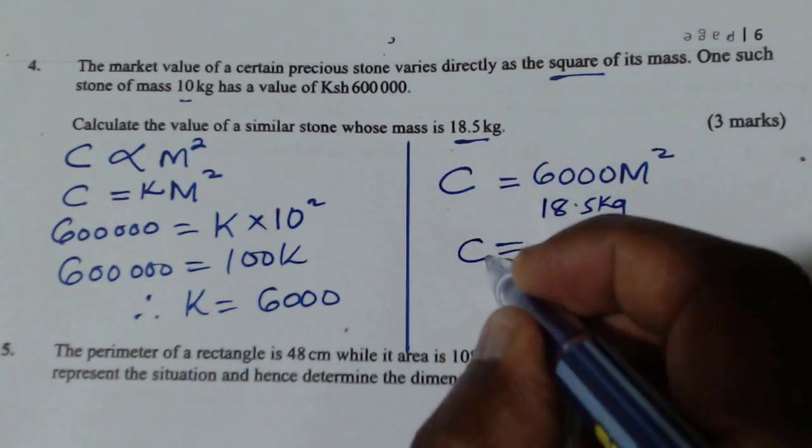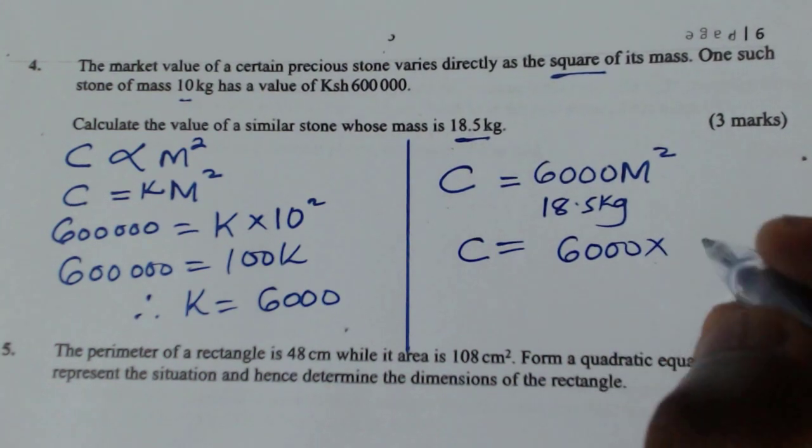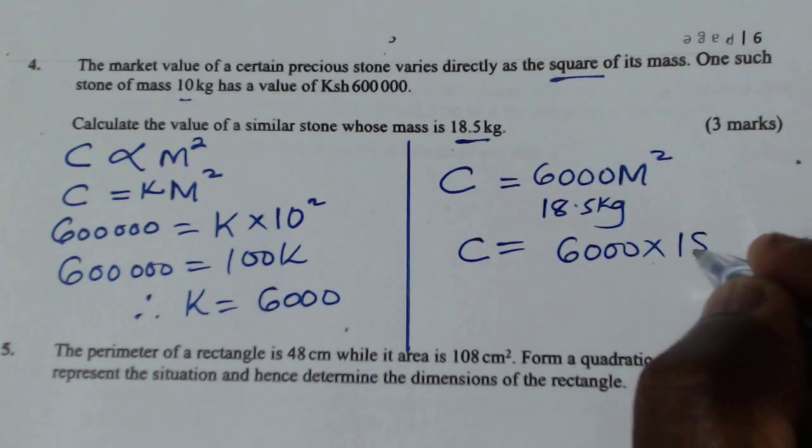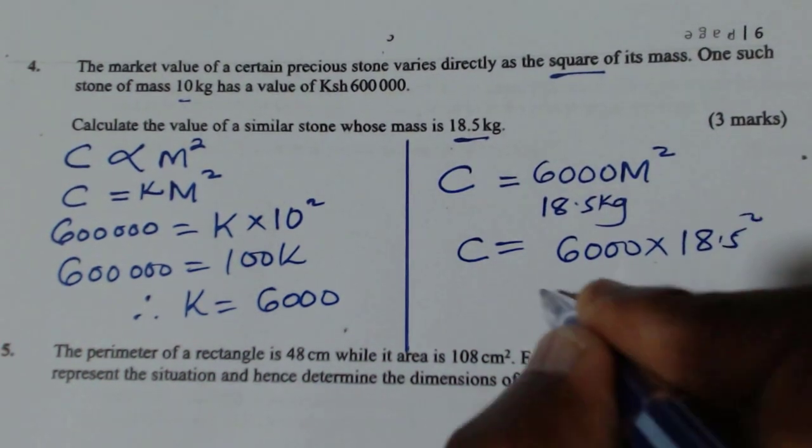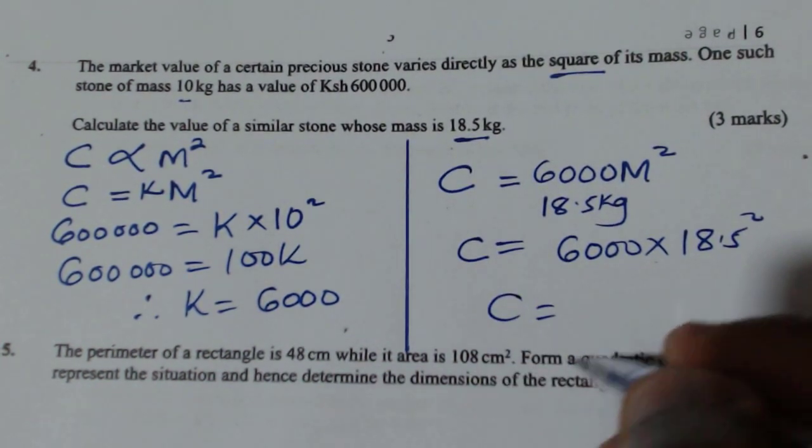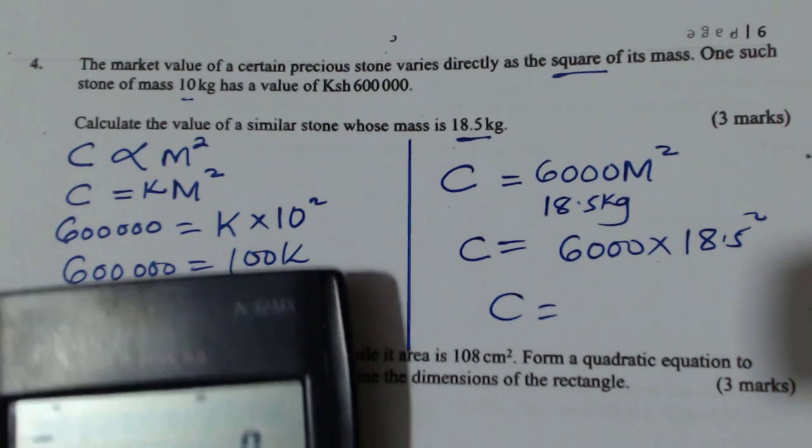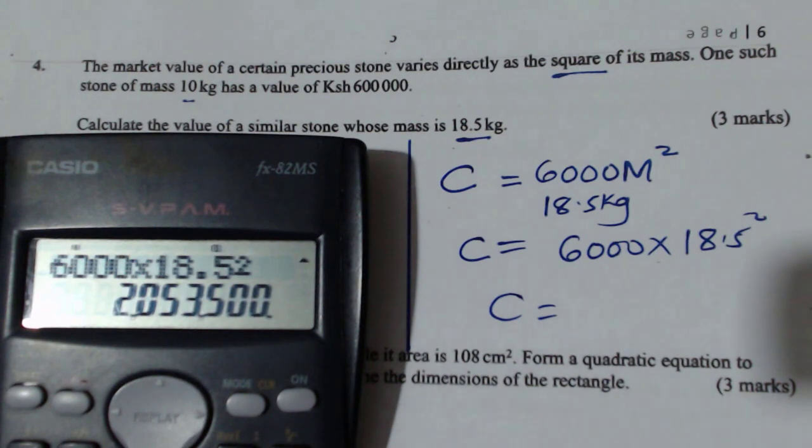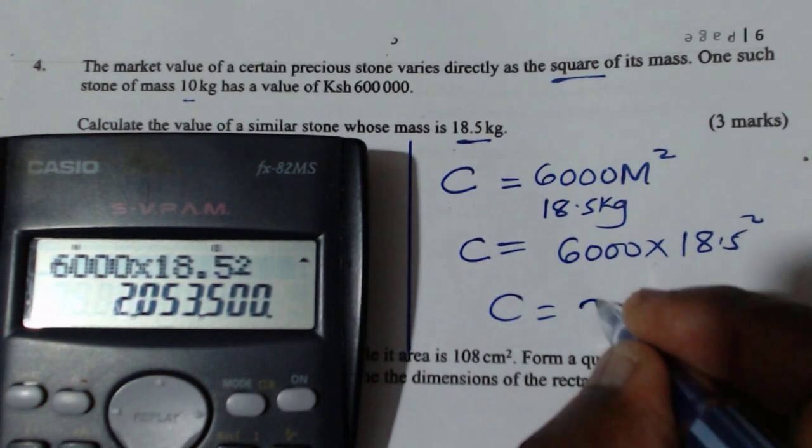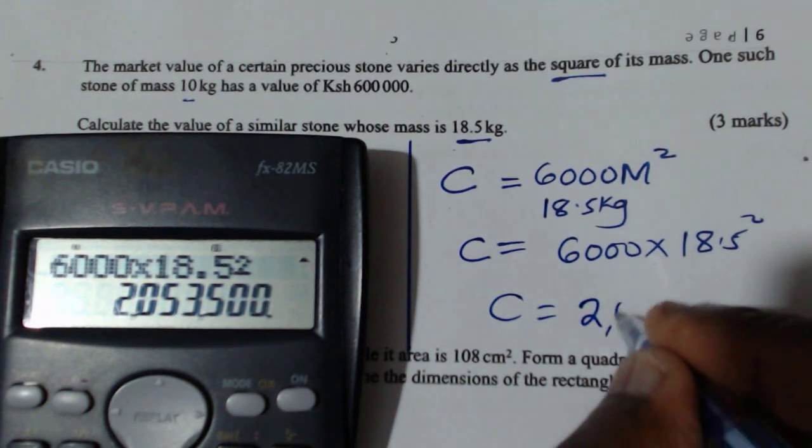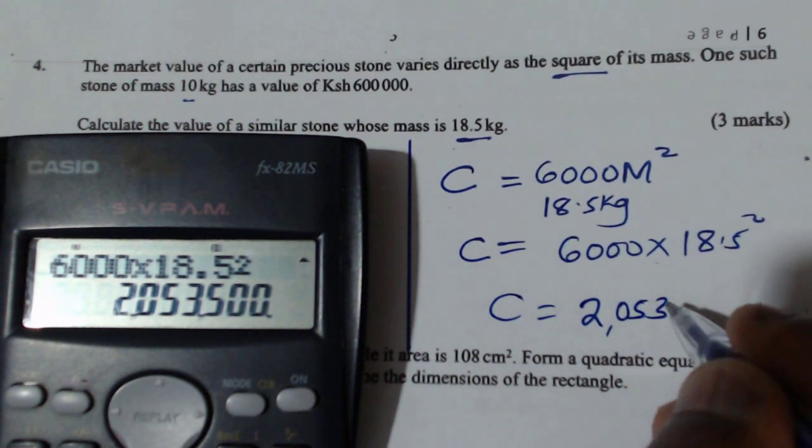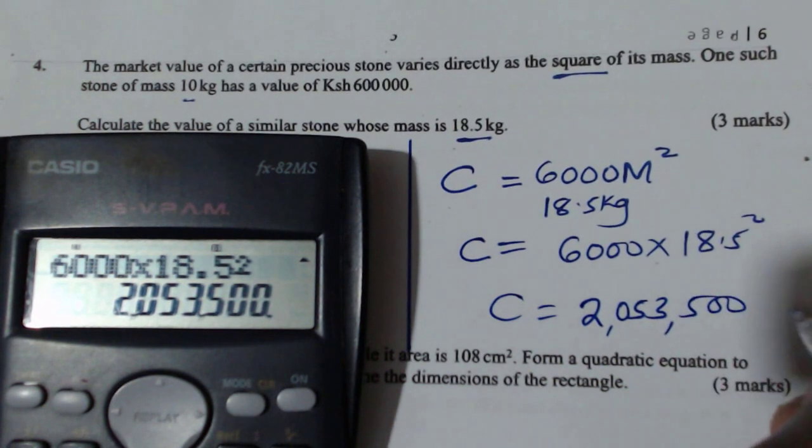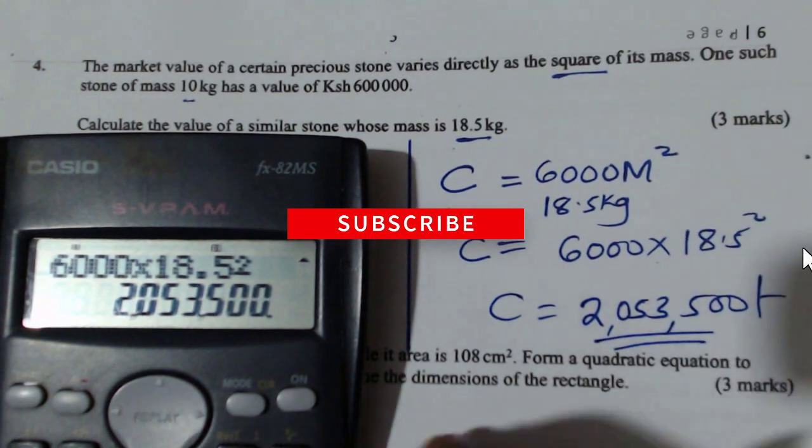So C equals 6,000 multiply by M is the mass, which is 18.5, and it is squared. So just multiply this using a calculator. So multiply 6,000 multiply by 18.5 squared. And this will give 2,053,500, that is the cost in K shillings.